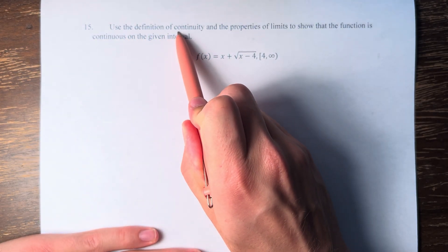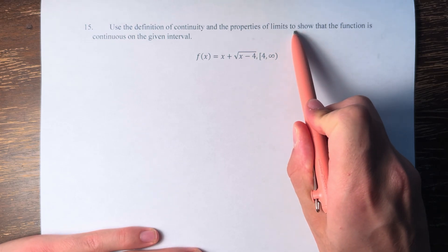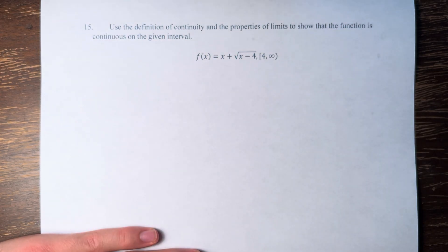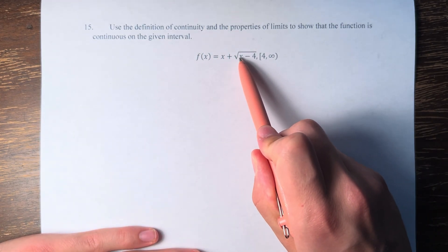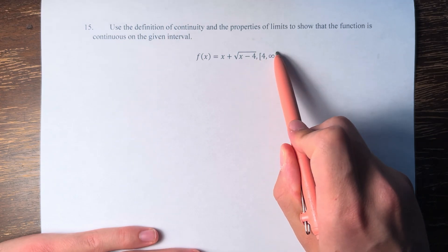In this problem, we're asked to use the definition of continuity and the properties of limits to show that the function is continuous on the given interval. So we have f of x is equal to x plus the square root of x minus 4 on the interval from 4 to infinity.